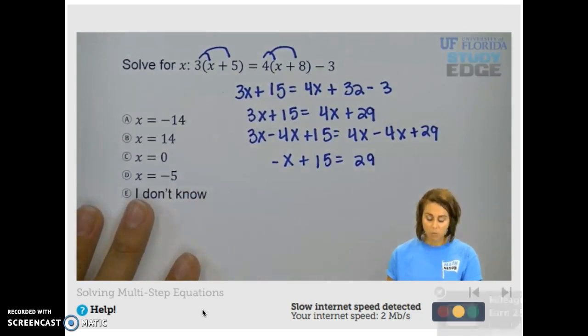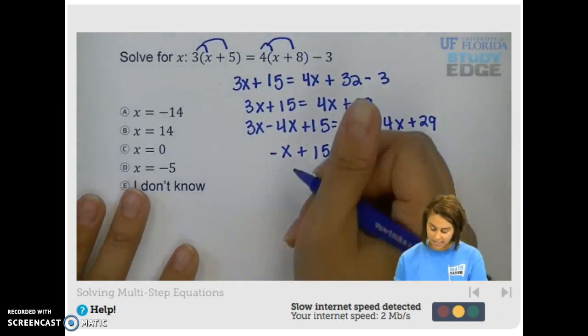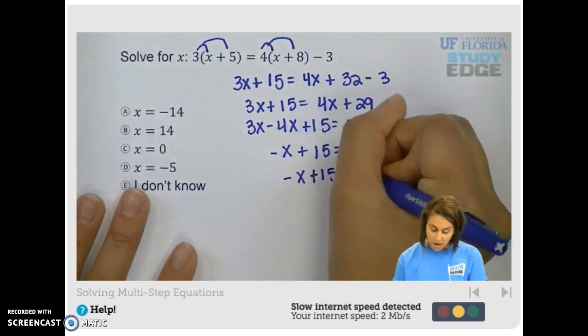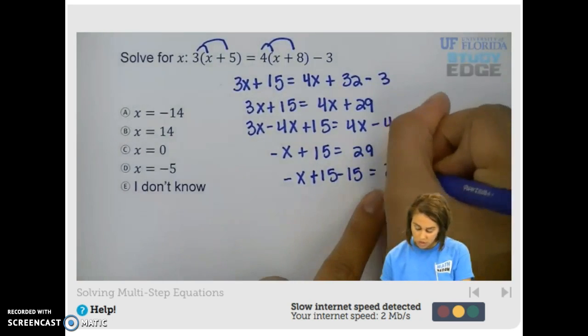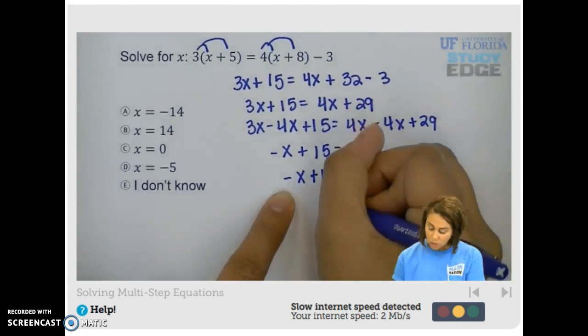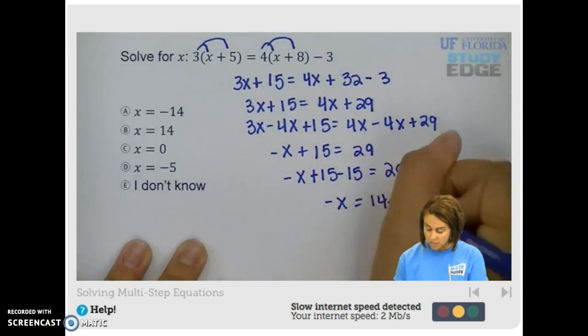Now we need to subtract 15, because our goal is to get x all by itself. We have negative x plus 15 minus 15 equals 29 minus 15. So we have negative x equals, what is 29 minus 15? 14.